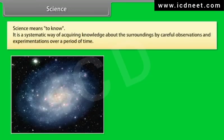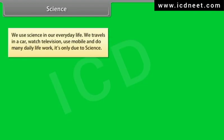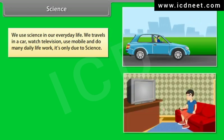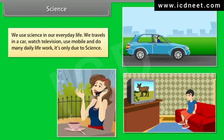Science means to know. It is a systematic way of acquiring knowledge about our surroundings by careful observations and experimentations over a period of time. We use science in our everyday life — we travel in cars, watch television, use mobile phones, and do many daily life tasks. It is only due to science.